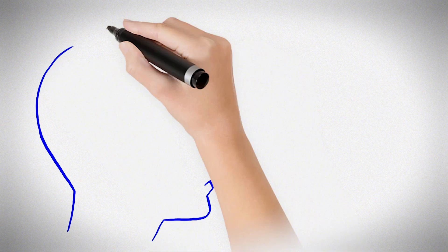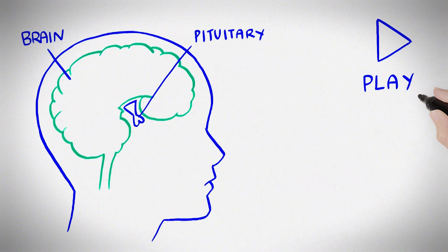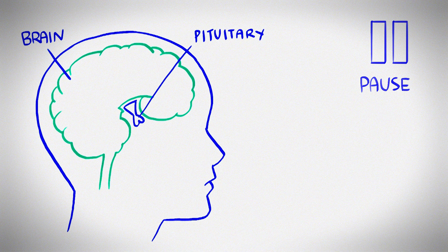Puberty blockers. What are puberty blockers? Puberty blockers cause your body to stop making puberty hormones. This is like hitting the pause button on puberty.